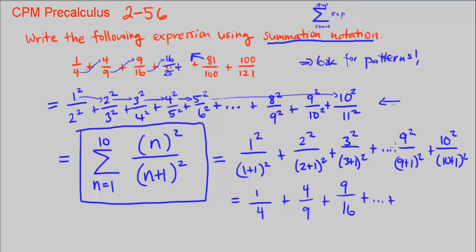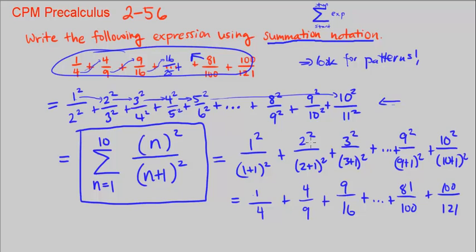9 squared is 81 over 10 squared is 100 plus 100 over 10 plus 1 squared is 121. So yes, these are the same. That's exactly what we wanted it to look like. We verified it.